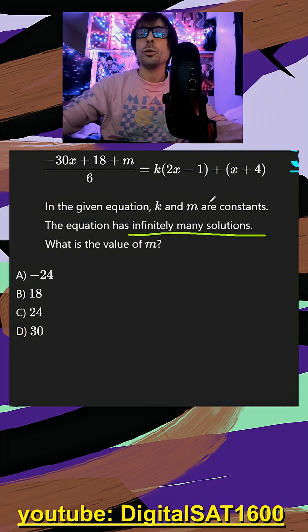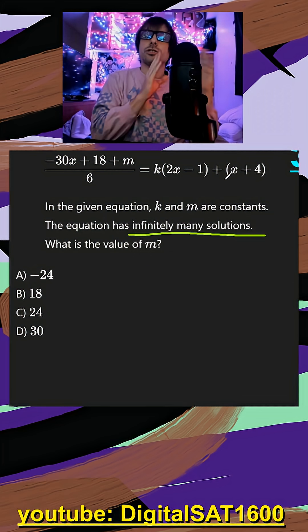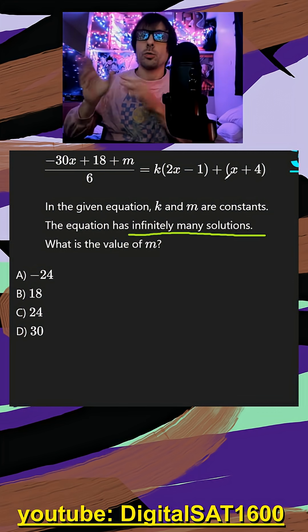But with an m and a k, all we have to do is put this side in slope-intercept form, do the same to this side, and then make an equation for our slopes and an equation for our y-intercepts.